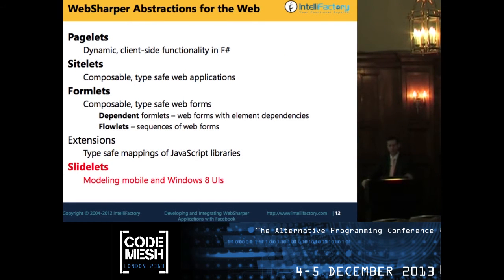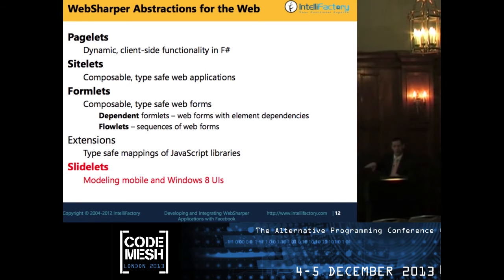Here's a list of the basic abstractions in WebSharper. We have pagelets — the basic building blocks for client-side functionality expressed in F#. Then you have sitelets for composing web applications, formlets for modeling composable and type-safe web forms, and extensions as bridges to different JavaScript libraries. We also have something coming up called sidelets, which can be used to model mobile and Windows 8 applications.